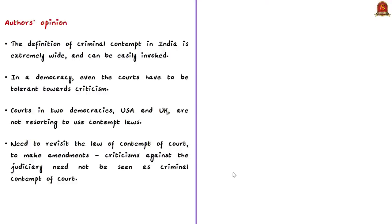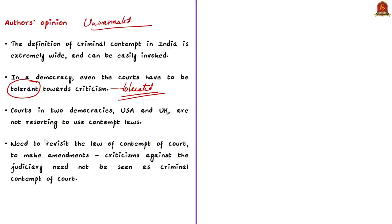The authors broadly say that this move is unwarranted. In a democracy, even the courts have to be tolerant towards criticism. Remarks that interfere with or obstruct the administration of justice should be treated as contempt, but other criticisms have to be tolerated by the judiciary, particularly in a democracy. This viewpoint is highlighted by the authors who mention that courts in two democracies — the USA and UK — are not resorting to use of contempt laws, because they consider that no one is above criticism and that courts should not use laws to silence criticism and dissent.